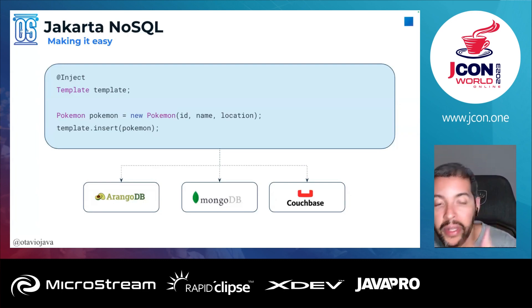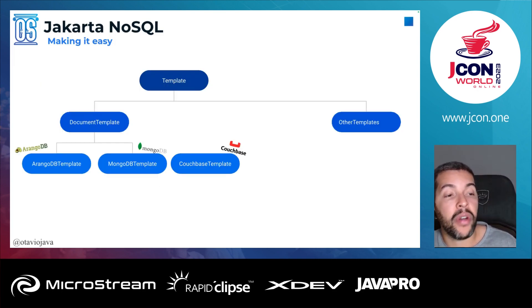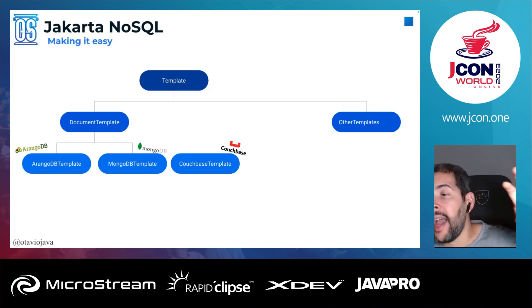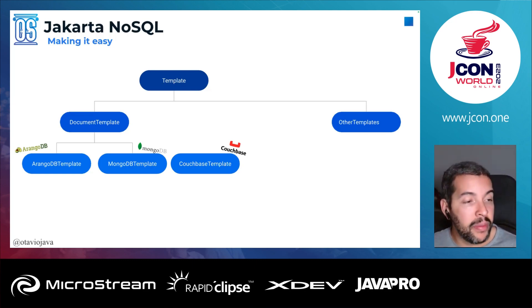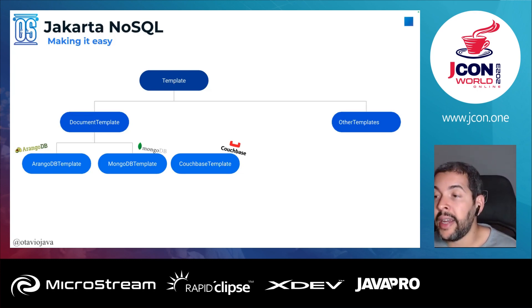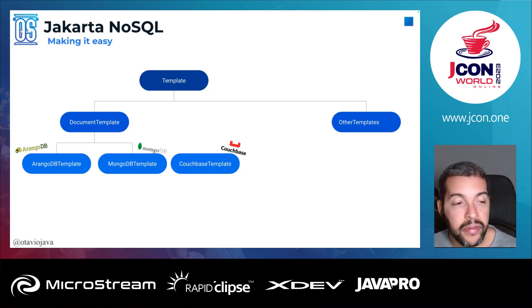As I said, you can use a specific behavior like DocumentTemplate — the specialization of Template for documents. The Template is the core implementation for NoSQL databases, and then I have specializations like DocumentTemplate to work with documents. Furthermore, for specific databases, for example with ArangoDB I can run AQL queries, with MongoDB I can run MongoDB queries, and with Couchbase I can run N1QL queries. So if I come here and inject the ArangoDB template, I can run ArangoDB Query Language.